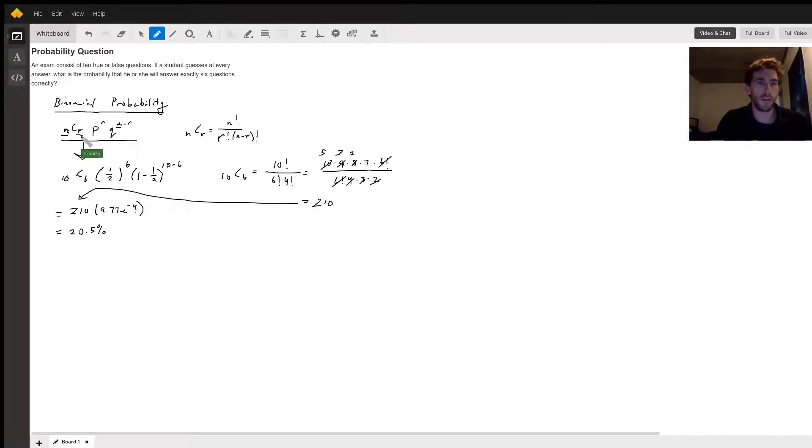The R terms are going to be the number of trials that you're doing, which is answering exactly six questions. This is used for any precise amount - whenever you see precisely or exactly, you're going to use this formula. The NCR formula is N factorial over R factorial over N minus R factorial.